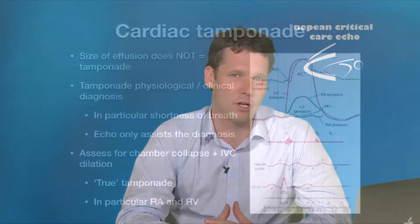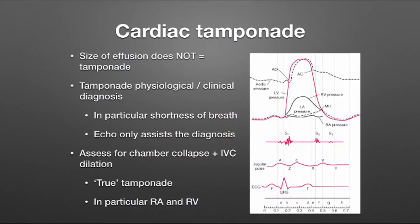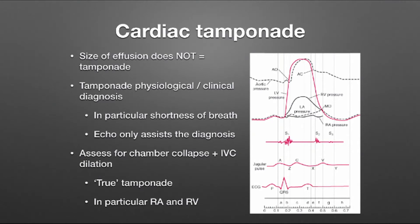When using echo to diagnose cardiac tamponade, remember that the size of the effusion does not equal tamponade. With chronic fluid accumulation, a large volume can be tolerated very well. Tamponade is a physiological or clinical diagnosis — for me it's particularly shortness of breath, as well as a raised JVP and hypotension. Echo can help confirm the diagnosis, but it cannot diagnose tamponade by itself. To assess for tamponade, you must look for chamber collapse — when pericardial pressure exceeds intra-chamber pressure, the right ventricle free wall collapses, reducing preload and causing hypotension.